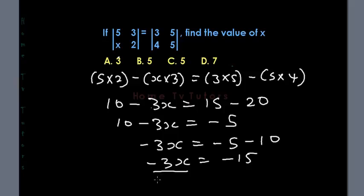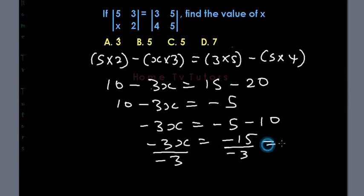We divide on both sides by minus 3. Dividing on the right hand side by minus 3 gives us 5. So the answer, option B, is the right answer.